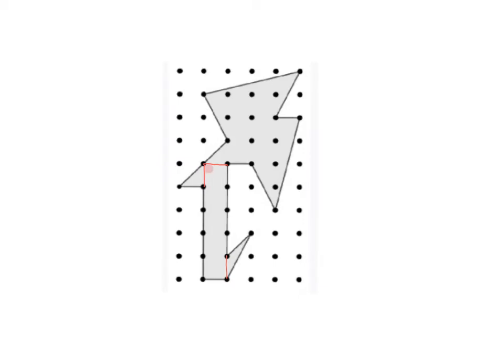This rectangle that I'm going to shade red right here has an area of one, two, three, four, five square units, so I'll go ahead and put a five there.